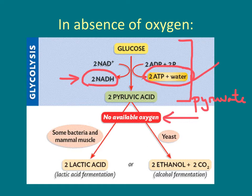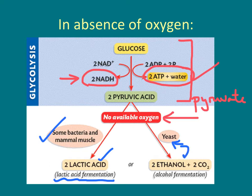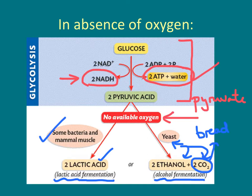In bacteria and mammalian cells, they do lactic acid fermentation, making lactate, or lactic acid. And in yeast, we know that we can make ethanol and CO2 — this is called alcohol fermentation. Most of you know yeast because it's important in bread. Bread rises because of the formation of carbon dioxide — the CO2 is generated and it bubbles through the bread.